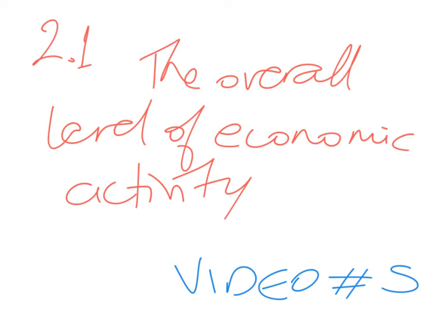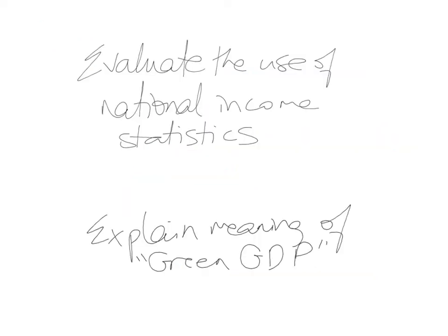This is video number five of unit 2.1, the first unit in macroeconomics, the overall level of economic activity. In the previous videos I have explained the circular flow of income in a simple and closed economy as well as in an open and complex economy. I've also examined the output approach, income approach and expenditure approach to measuring national income, and talked about GDP and GNI.